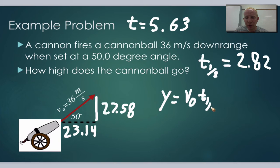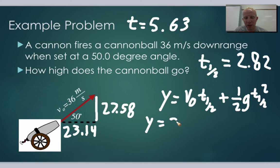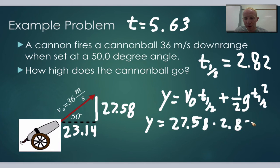Writing it out formally: y equals v₀y times t_half plus ½g times t_half squared. We know every single value — v₀y was 27.58 meters per second and t_half was 2.82 seconds — and we make sure to use negative g.